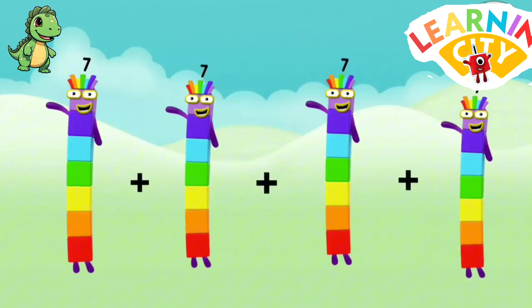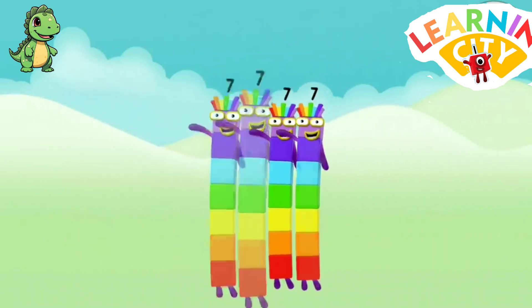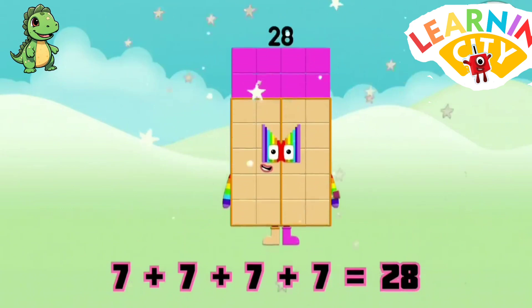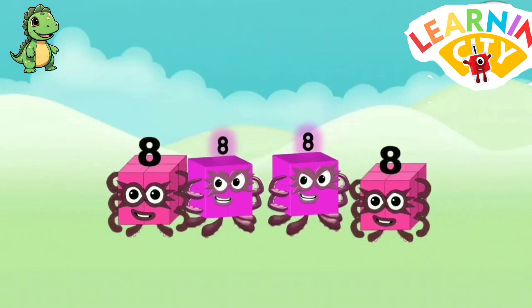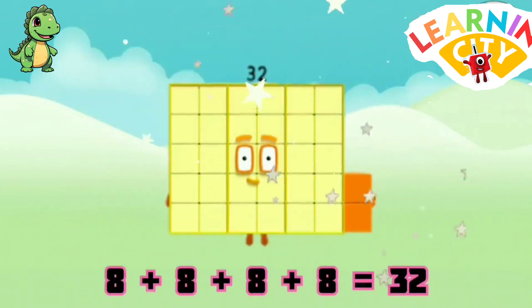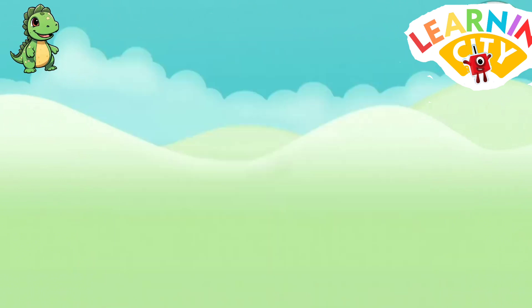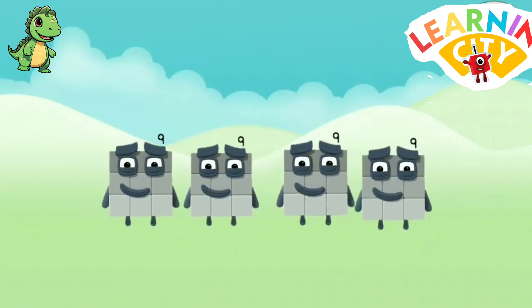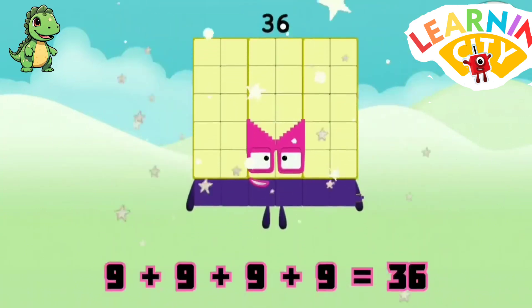7 plus 7 plus 7 plus 7 equals 28. 8 plus 8 plus 8 plus 8 equals 32. 9 plus 9 plus 9 plus 9 equals 36.